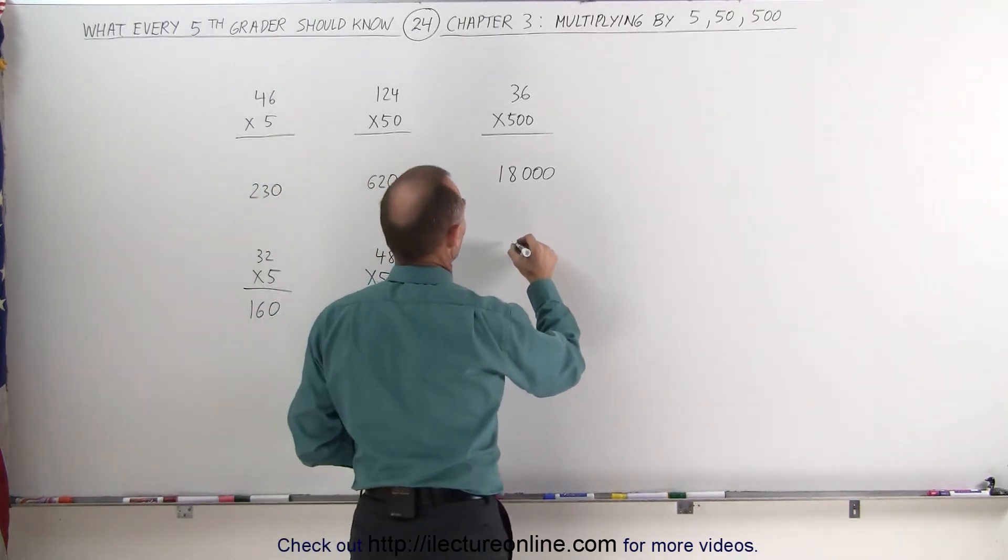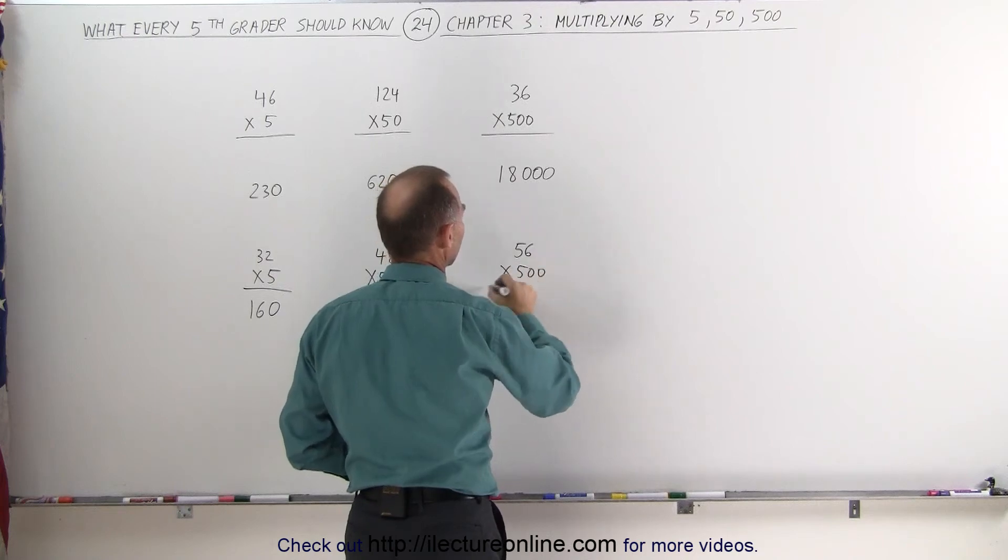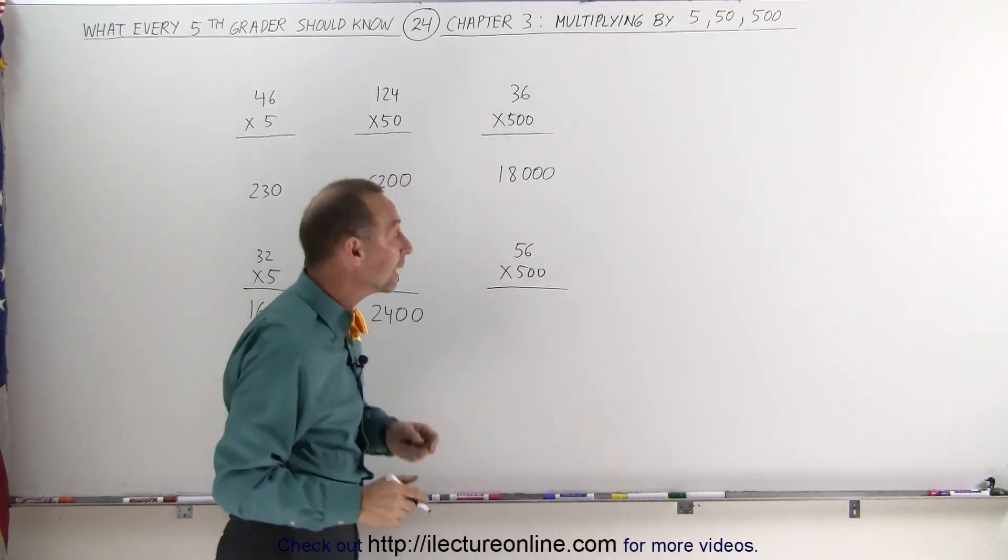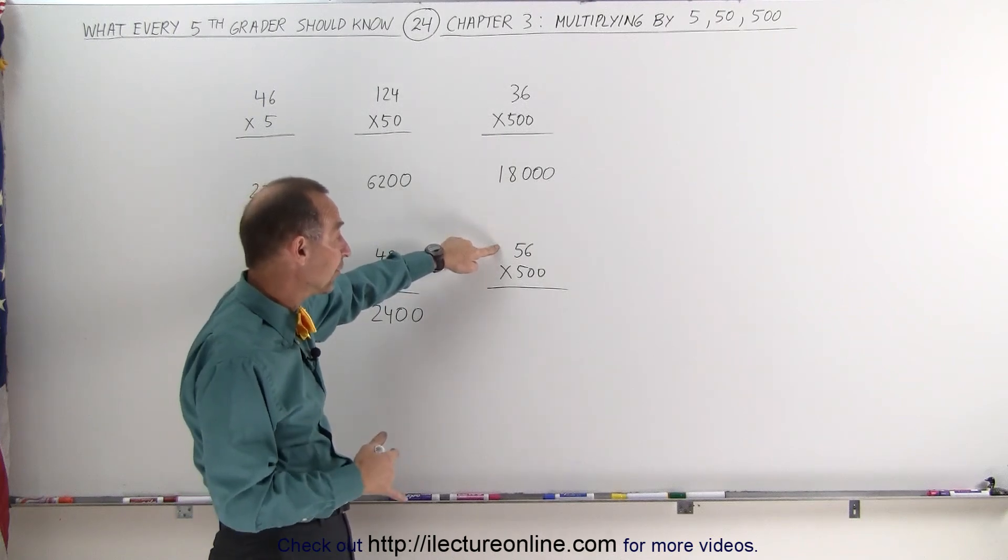How about 56 times 500? That seems like a difficult thing to do, but again, take half of 56, which is 28. 28 times 2 is 56.